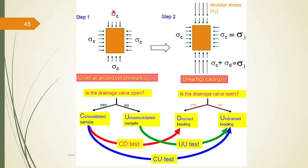In stage one, the consolidation stage, if the drainage valve is open then it is a consolidated test, and if the drainage valve is closed it is an unconsolidated test. Based on different combinations in the two stages, we have CD test, UU test, and CU test — we have studied about these in previous sessions. For drawing the Mohr circle we need the principal stresses σ1 and σ3.